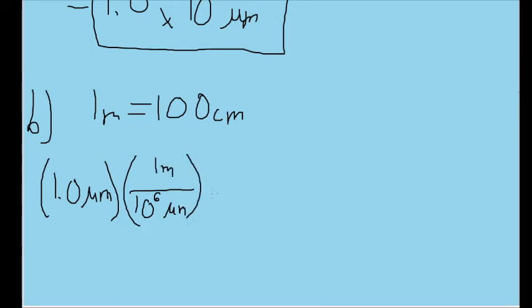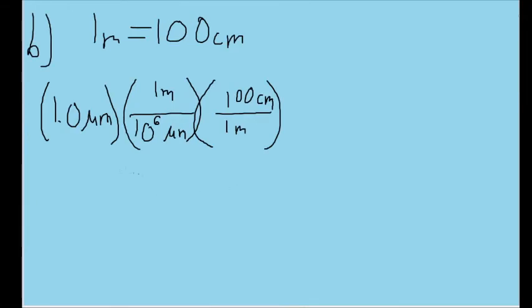Then we're converting from that into centimeters. Applying the exact same method of the chain link conversion, we'll put one meter in the denominator and 100 centimeters in the numerator. And now this is our conversion for microns into centimeters. Plugging this into our calculator, we find that it's equal to 0.0001 centimeters.